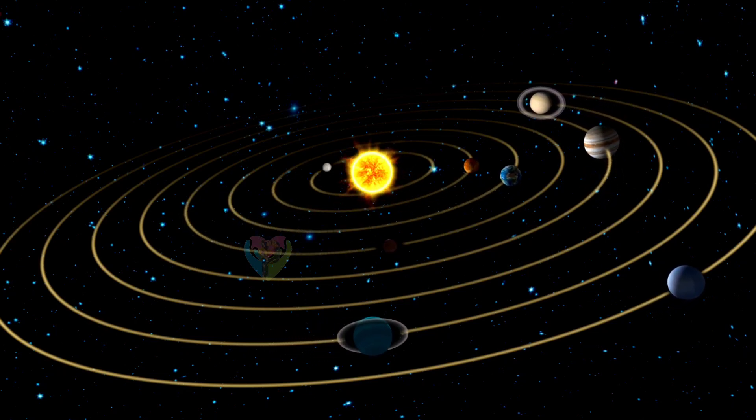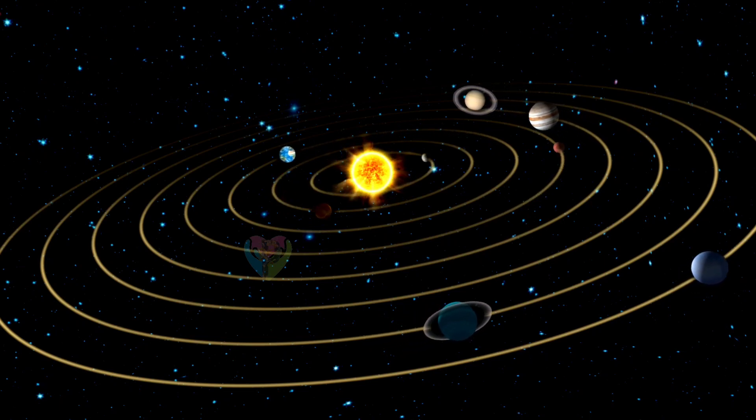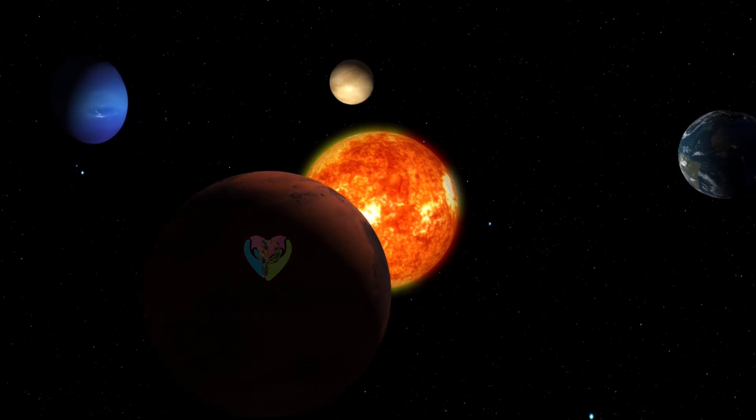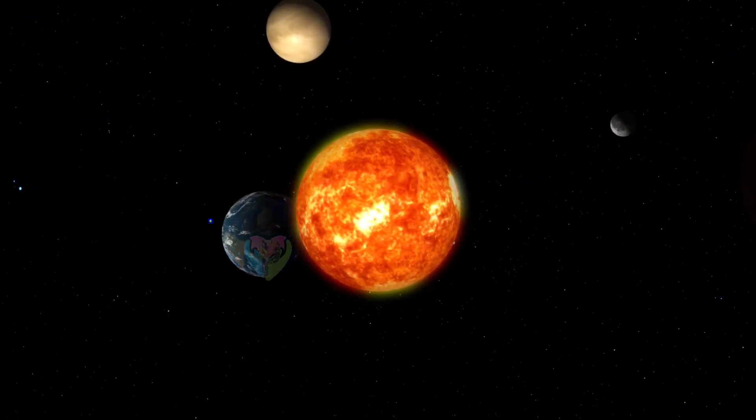Two natural satellites, Jupiter's moon Ganymede and Saturn's moon Titan, are larger but not more massive than Mercury, the smallest terrestrial planet, and Jupiter's moon Callisto is nearly as large.